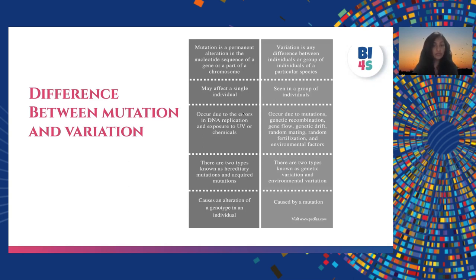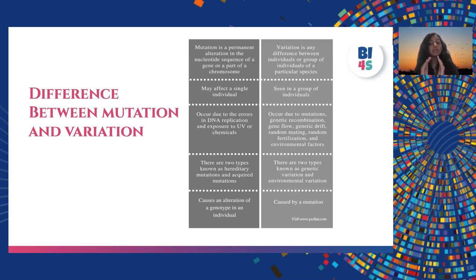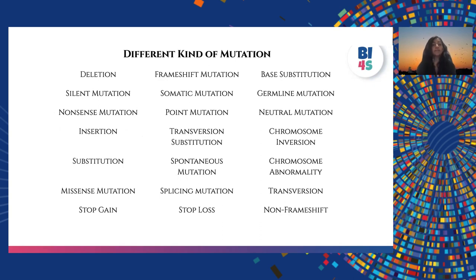Mutations can affect a single individual, while variations can be seen in groups. Mutations occur due to errors in DNA replication, exposure to UV or chemicals. Variations occur due to mutation, as well as genetic recombination, gene flow, genetic drift, random mating, geographical barriers, and evolution. There are two types of mutations — hereditary and acquired — and two types of variations — genetic and environmental. The cause of mutation is an alteration in the genotype; the cause of variation includes mutation among other factors.